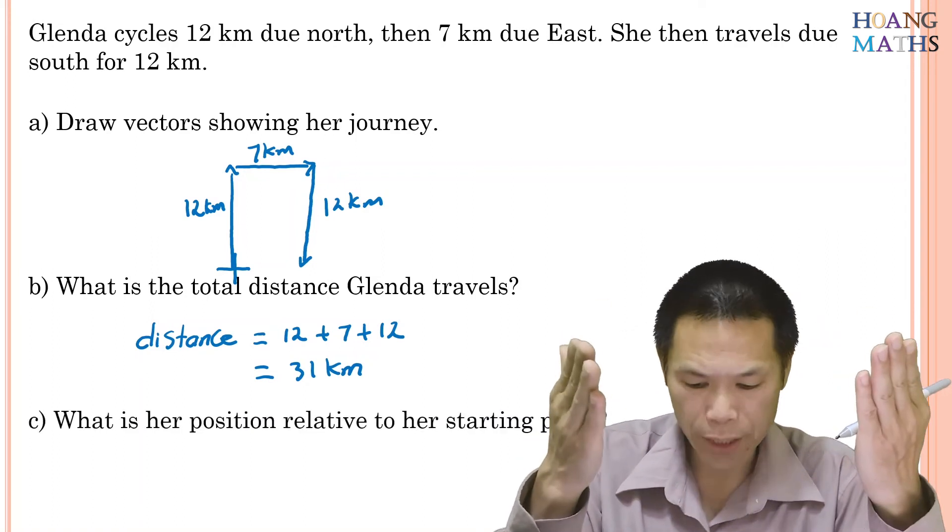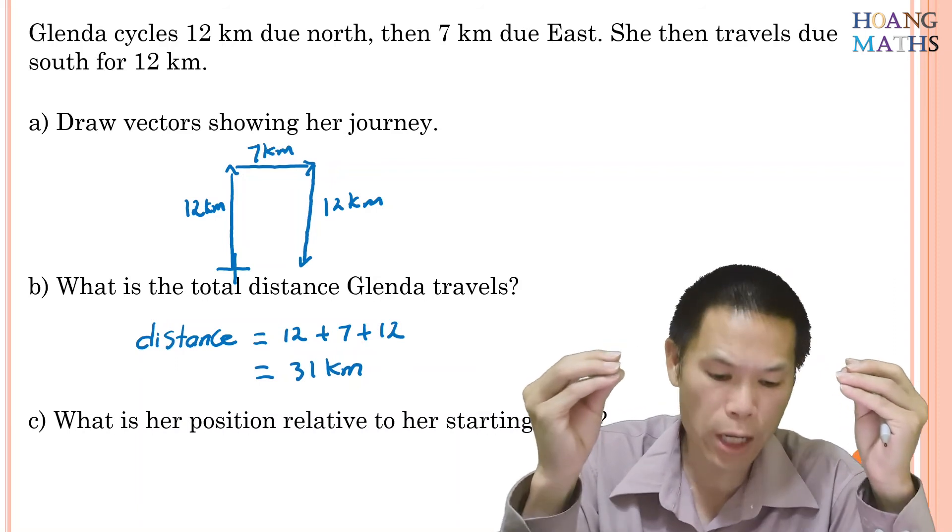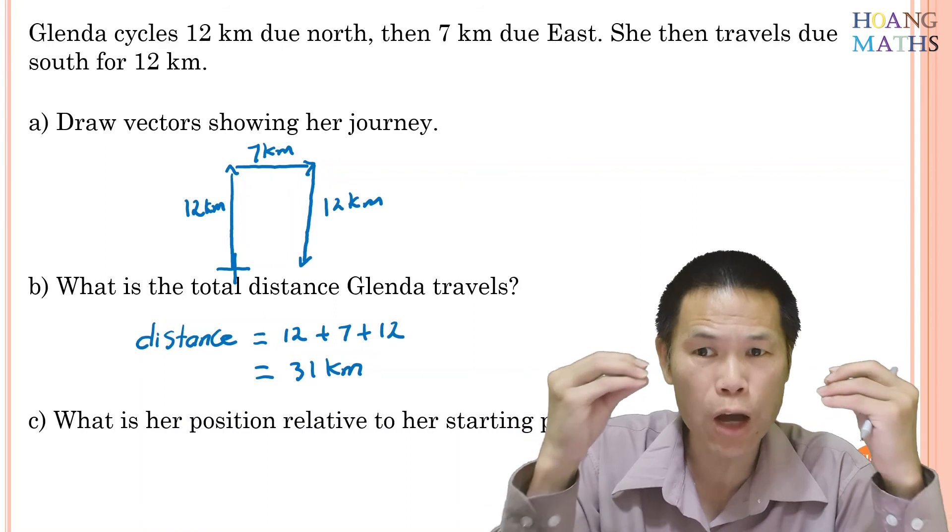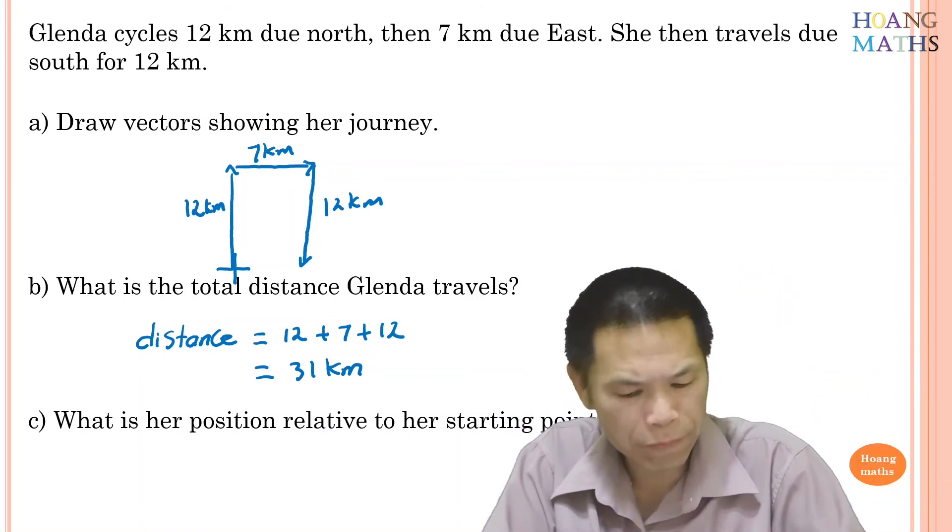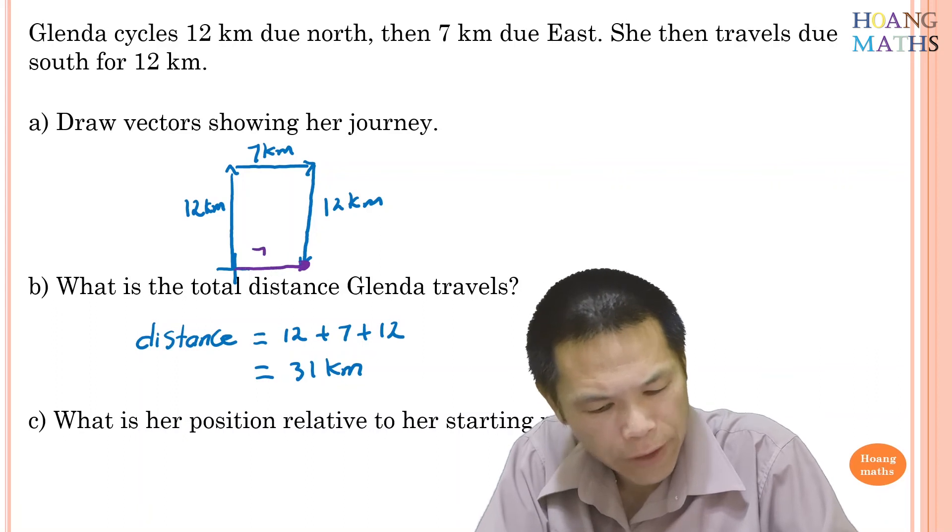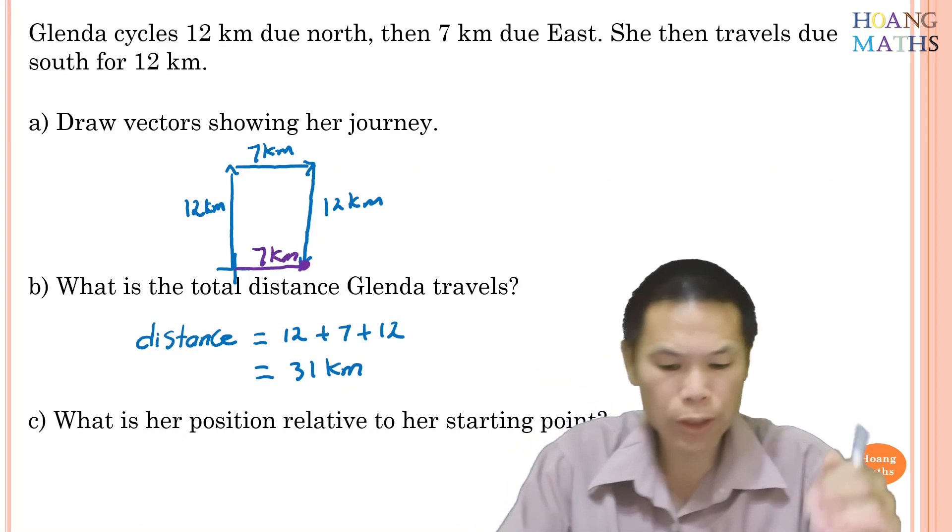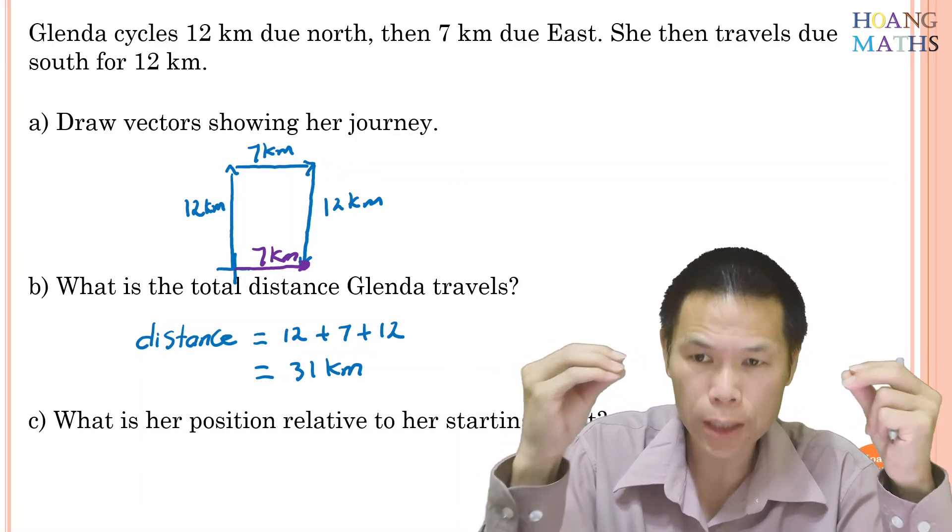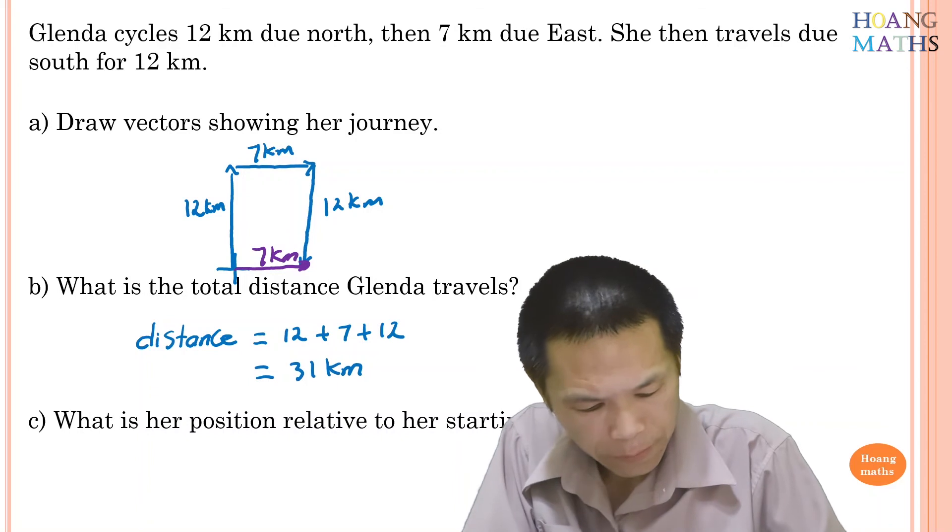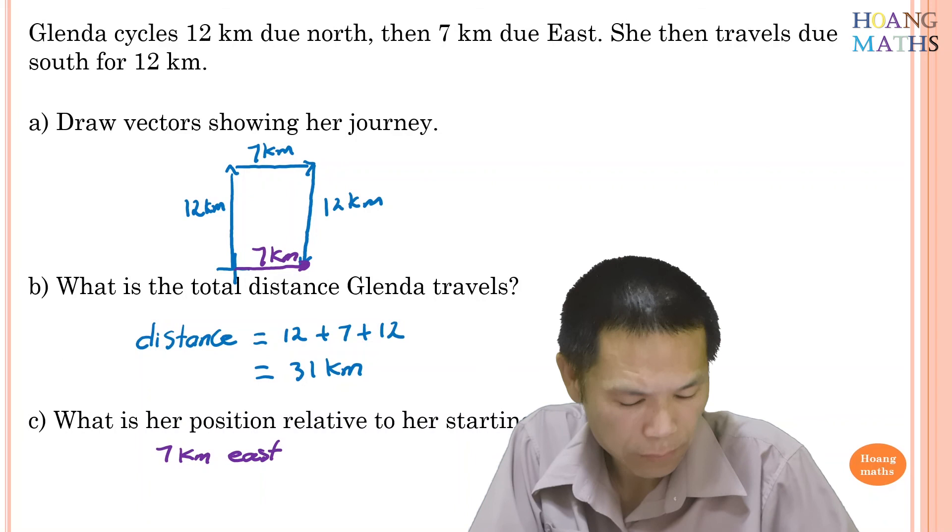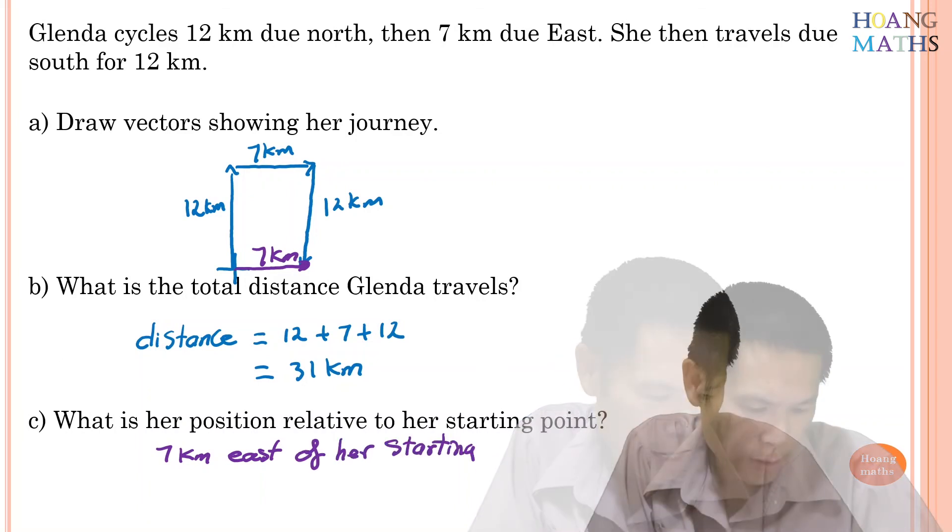Last one: what is her position relative to her starting point? So this means we need to work out the displacement of Glenda. So her position now is here, so that is east, 7 kilometers. So the displacement now is 7 kilometers east of her starting point.